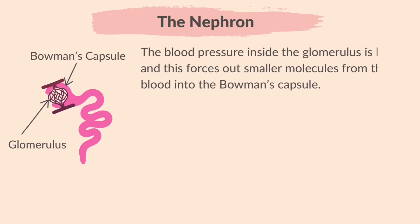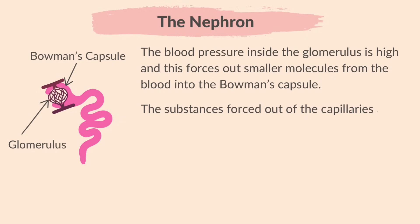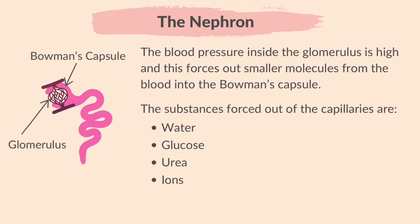The blood pressure inside the glomerulus is high, and this forces out smaller molecules from the blood into the Bowman's capsule. The substances forced out of the capillaries are water, glucose, urea, and ions. This process is known as ultrafiltration.